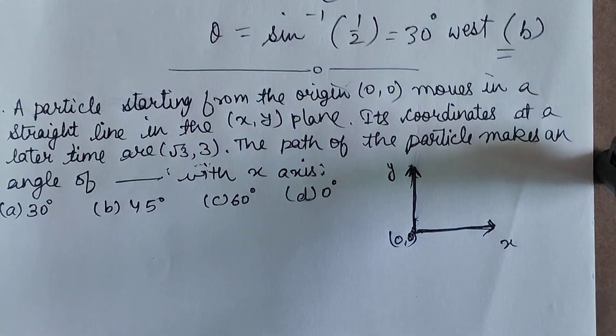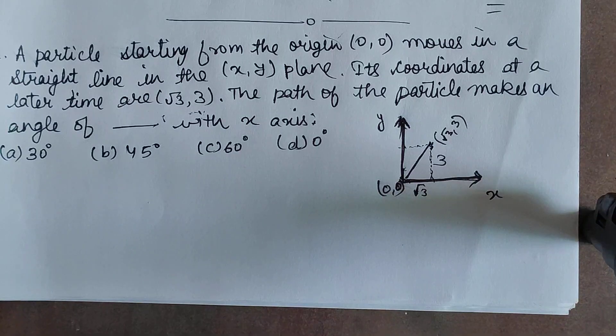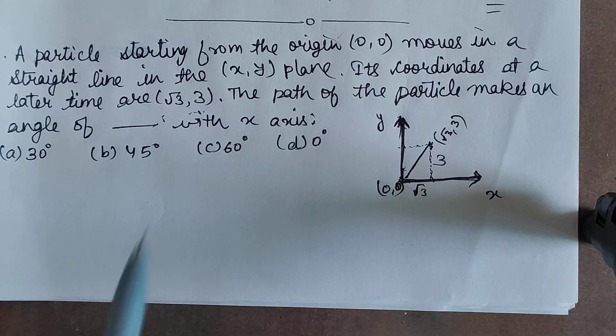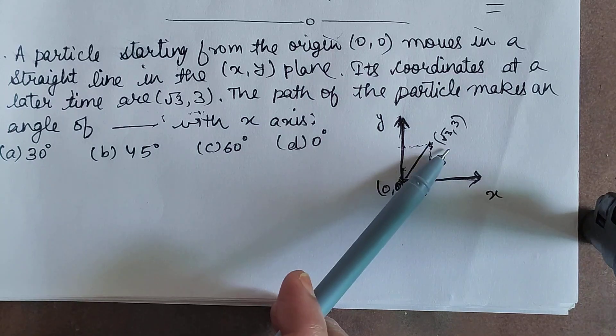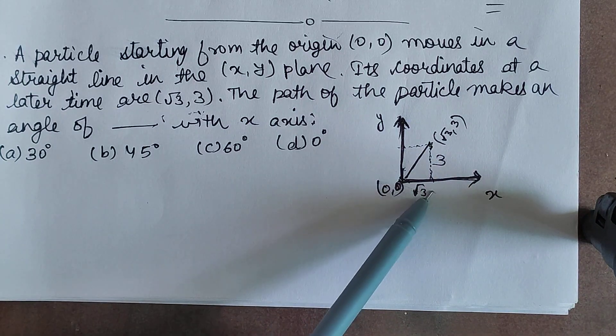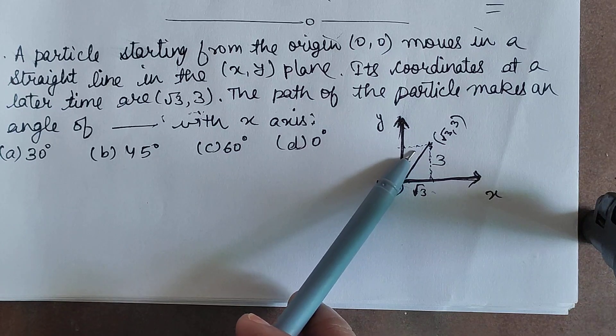This will become this kind of diagram because its position coordinate at a later time is root 3, 3. So x-coordinate root 3 and y-coordinate is 3.